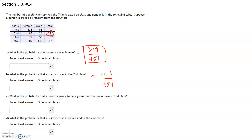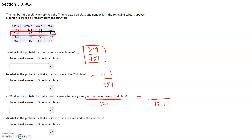Part C: what is the probability that a survivor was female given that the person was in the second class? When we have a 'given,' we're only going to focus on the people that were in the second class. Whatever the given is, that's also your denominator — so how many people are in the second class? That's 121, and that will be your denominator. Of the 121 people in the second class, 95 were female. So the probability is 95 out of 121.